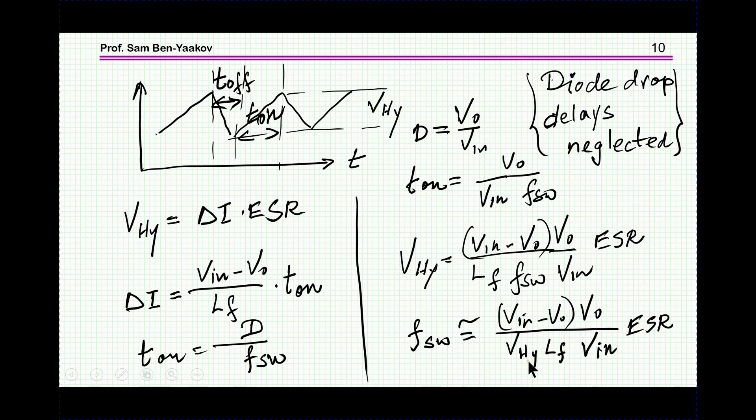We can get out the switching frequency. Now as we can see, the switching frequency depends on some constant values like the inductance, the ESR, the width of the hysteretic band, but also on the operating point. So for different operating points you are going to get different frequencies. So it's a non-constant frequency operation, it's a variable frequency operation.